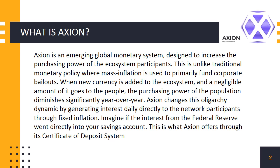This is unlike traditional monetary policy where mass inflation is used to primarily fund corporate bailouts. When new currency is added to the ecosystem, a negligible amount of it goes to the people. The purchasing power of the population diminishes significantly year over year. Axion changes this oligarchy dynamic by generating interest daily directly to the network participants through fixed inflation.